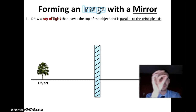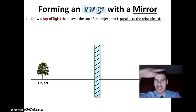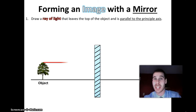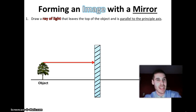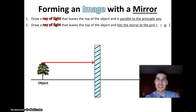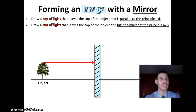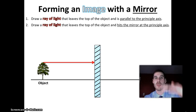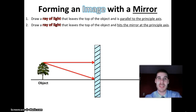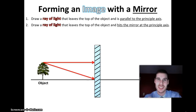Let's draw a ray of light that leaves the top of the tree and is parallel to that black line — the principal axis. That ray looks like this: a line leaving the top of the tree, parallel to the principal axis. Now step two: draw a ray of light that also leaves the top of the object, but this time it has to hit the mirror at the principal axis. So that ray is angled down so it hits the mirror right at the principal axis. Now we've got two rays of light coming off the top of the tree and hitting the mirror.